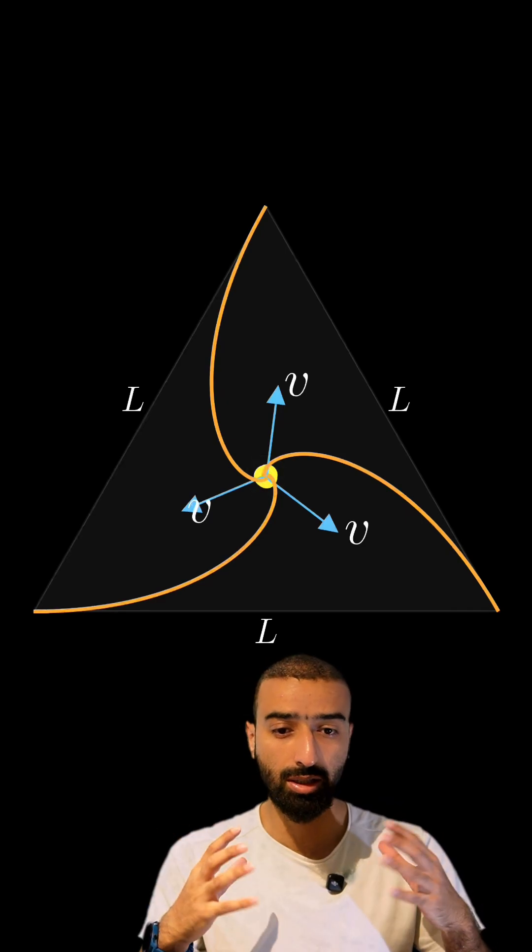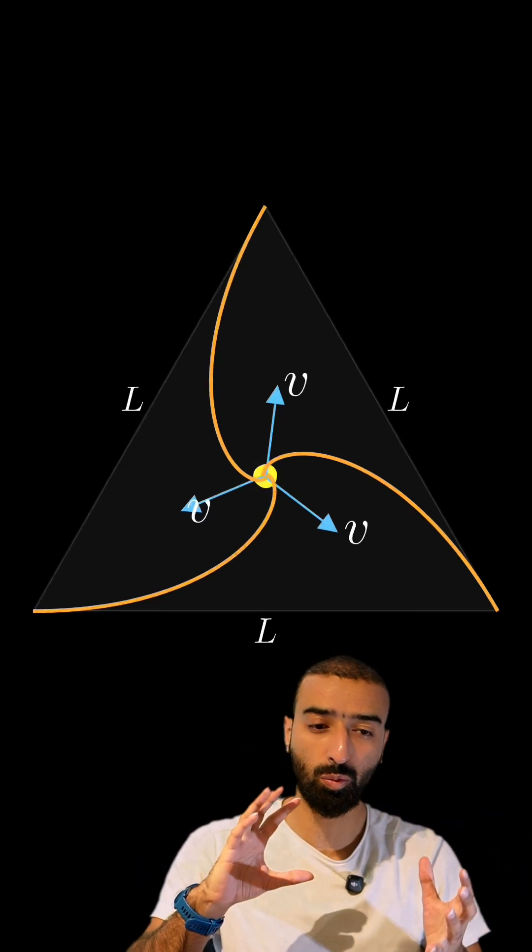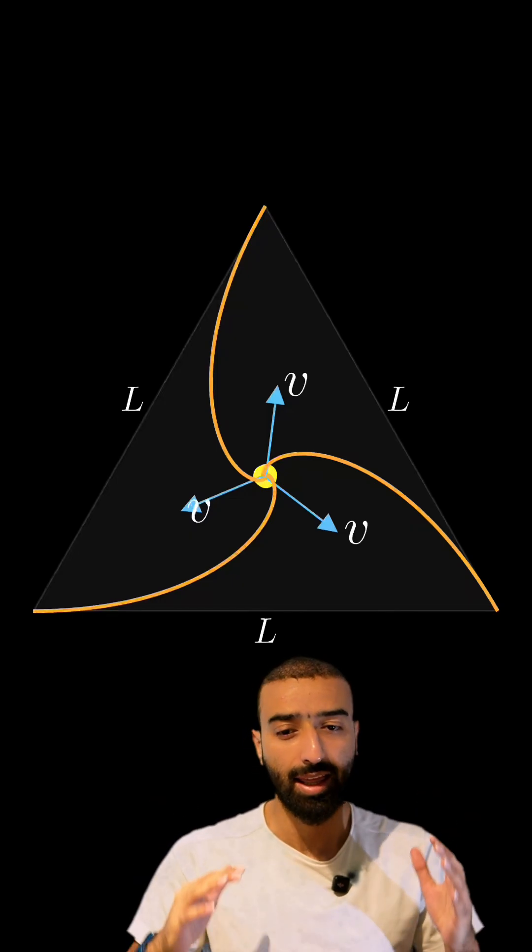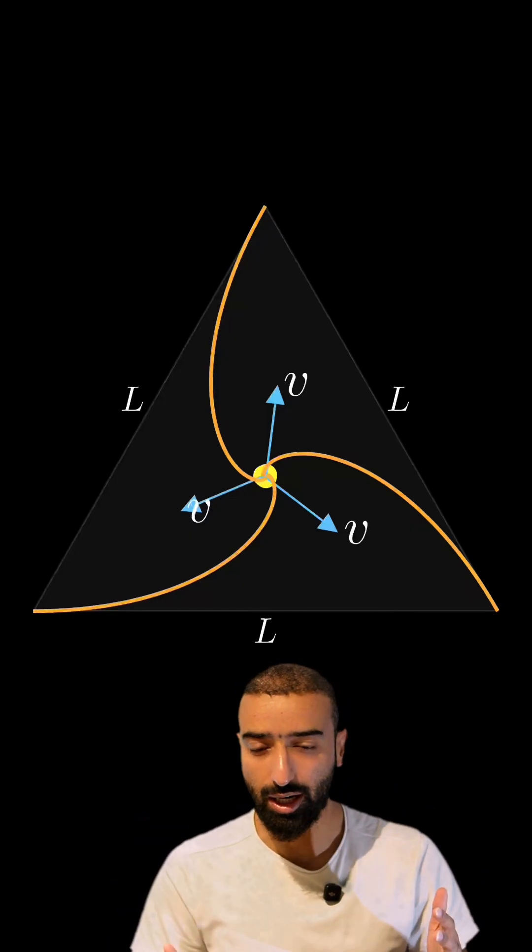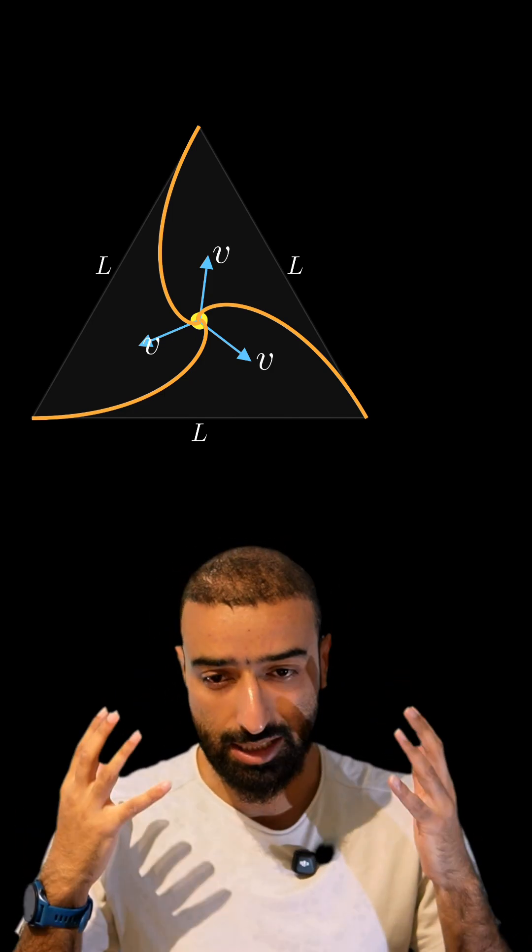As they move, they continuously turn towards their targets, and the three curved paths form spirals that collapse towards the center of the triangle. The motion continues until all three particles meet.